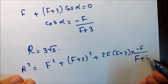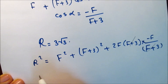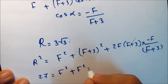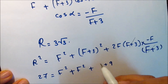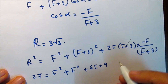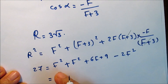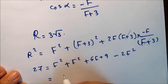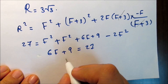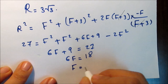Expanding and simplifying: 27 = f² + f² + 6f + 9 − 2f². The f² terms cancel to zero, leaving 27 = 6f + 9. Moving 9 to the other side: 6f = 18, therefore f = 3 newtons.